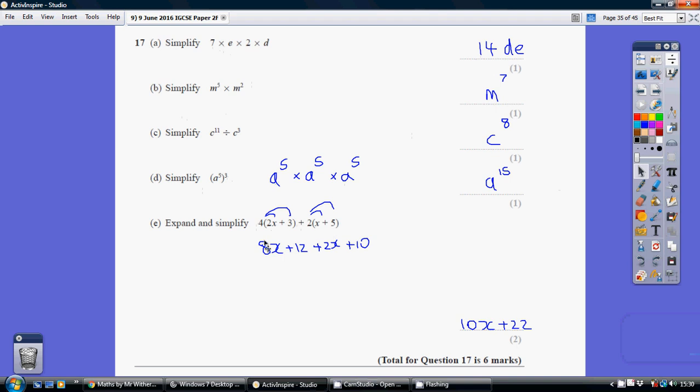So that would give us one mark. We've expanded and then simplifying, we're gathering like terms. So we gather up all our x's and we gather up our normal numbers. 8x plus 2x is 10x, and 12 add 10 is 22.